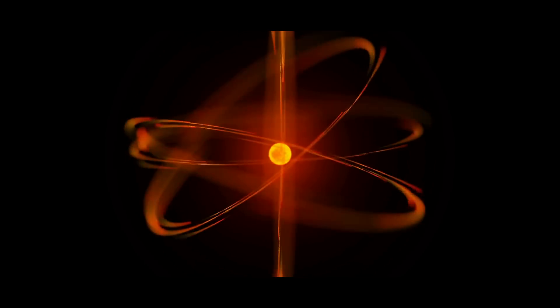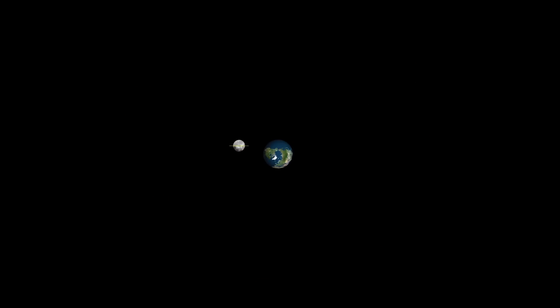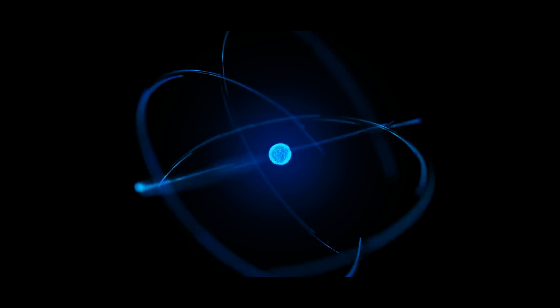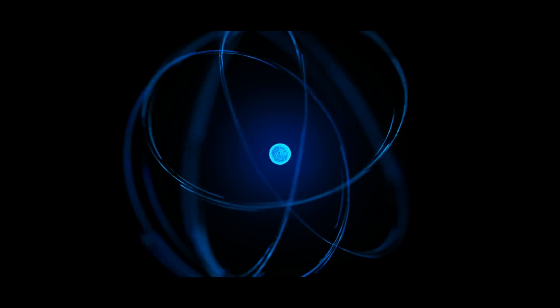Electrons orbit the nucleus of atoms, but not in the same way as the moon orbits the planet. Around the nucleus, electrons can be simultaneously present in multiple locations. An electron, for instance, will be present at three different locations at the same time, A, B, and C.